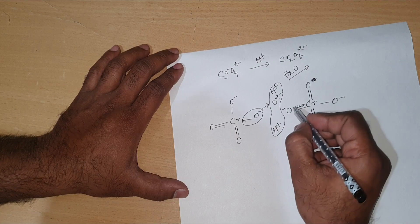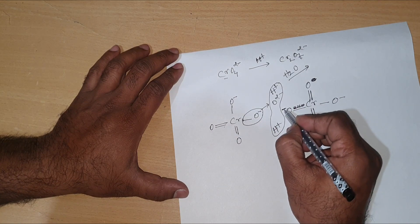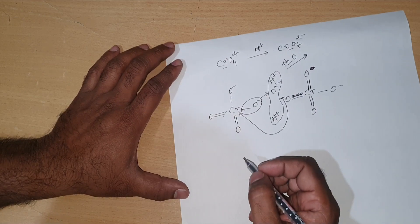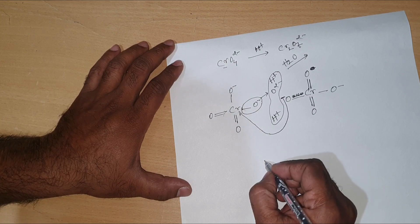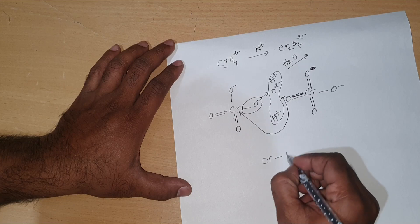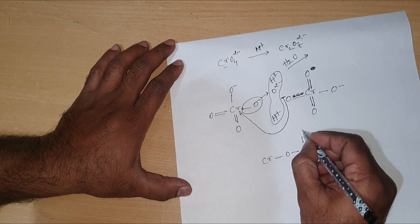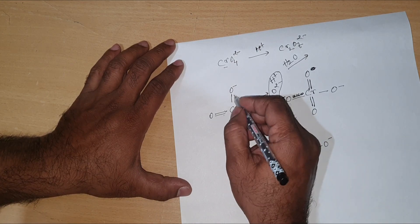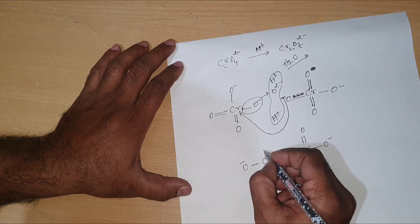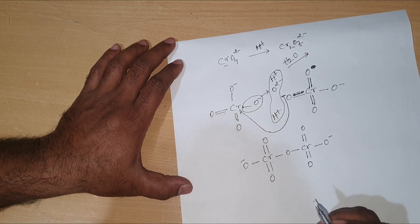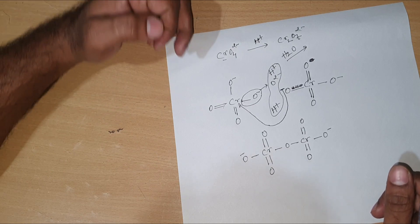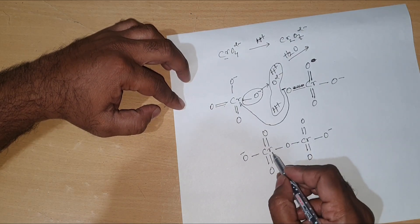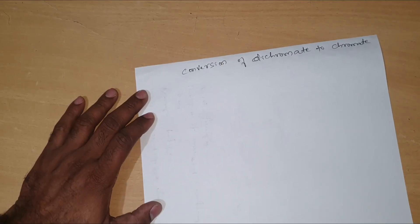The remaining oxygen with its negative charge forms a bond between the two chromium atoms, creating an oxygen bridge between them. This is how the conversion from chromate to dichromate happens in acidic medium — with the removal of an oxygen atom so that an oxygen bridge is formed between the two chromium atoms.